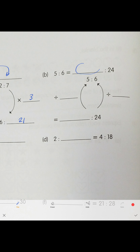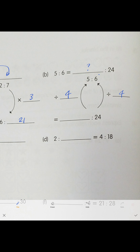Next: 5 to 6 equals some number to 24. We divide 24 by 6, which gives us 4. So our multiplier is 4, meaning 4 times 5 equals 20, or 20 divided by 4 is 5. The answer is 20.